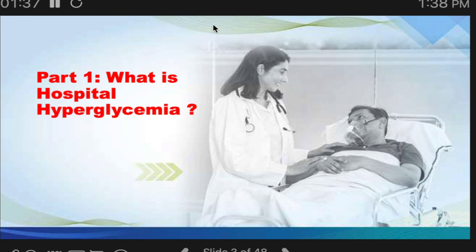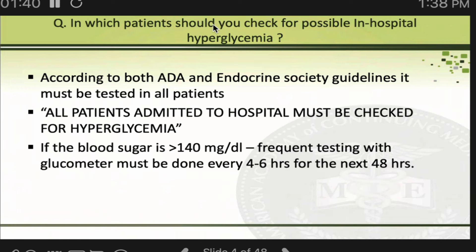What is hospital hyperglycemia? Any patient who comes to the hospital may already know they have diabetes, or may be diagnosed for the first time during admission, or may not have diabetes at all but develop high blood sugar due to medications like steroids or catecholamines, or due to the stress of hospitalization or infection. You would have noticed in the wards that patients with otherwise normal sugar can have elevated blood sugars when admitted — that is known as stress hyperglycemia.